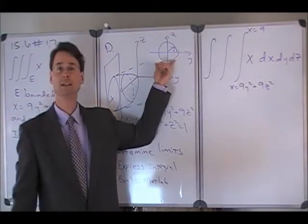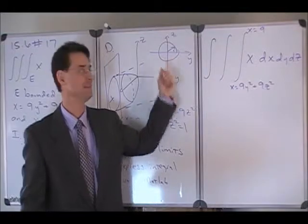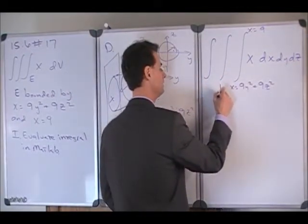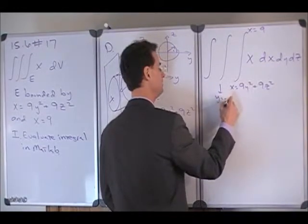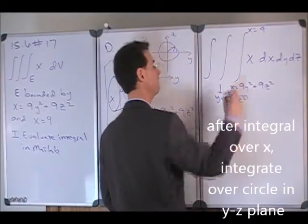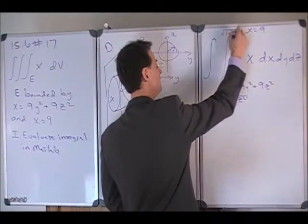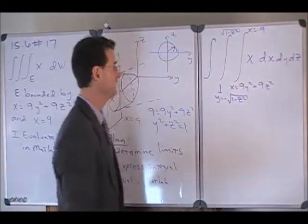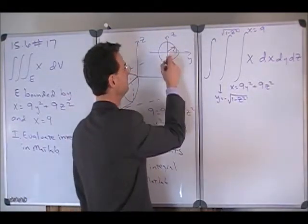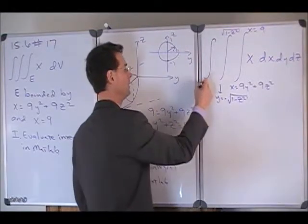Now we simply need to integrate over the circle, radius 1 centered at the origin in the xy plane. So that is y is equal to negative square root of 1 minus z squared is the lower bound, and the upper bound is the square root of 1 minus z squared. And then when we're integrating in z, z goes from negative 1 to 1.